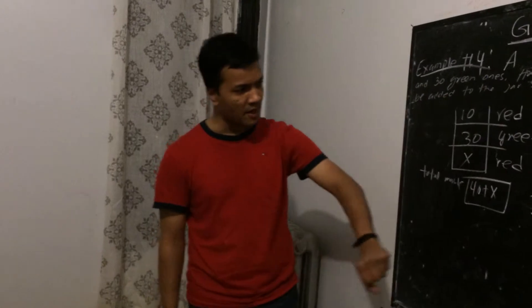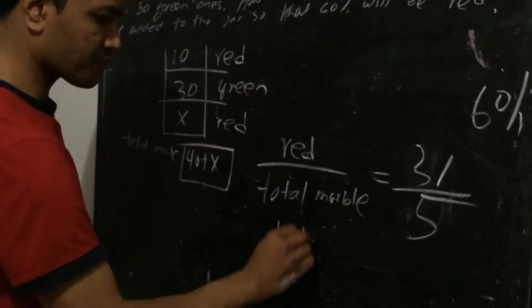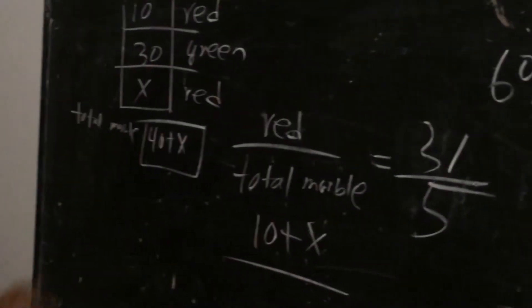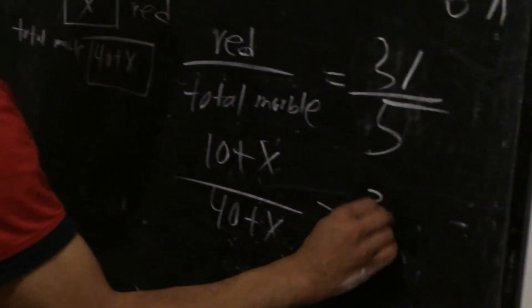3 over 5 is 60%. So red marbles, how many red marbles? 10 plus x. How many total marbles? 40 plus x. Equal to 3 over 5.